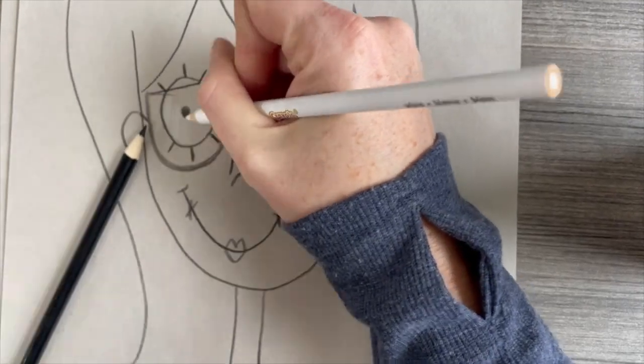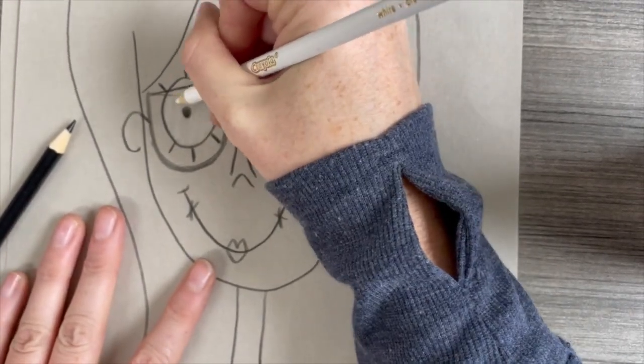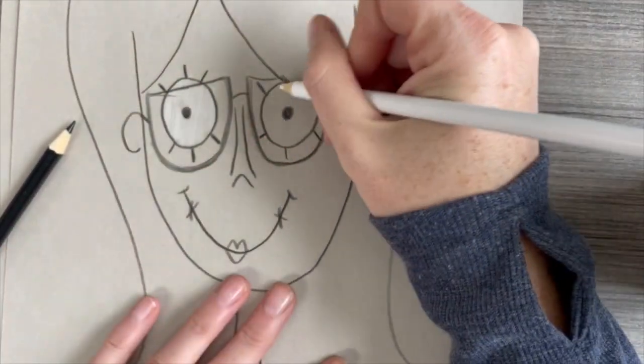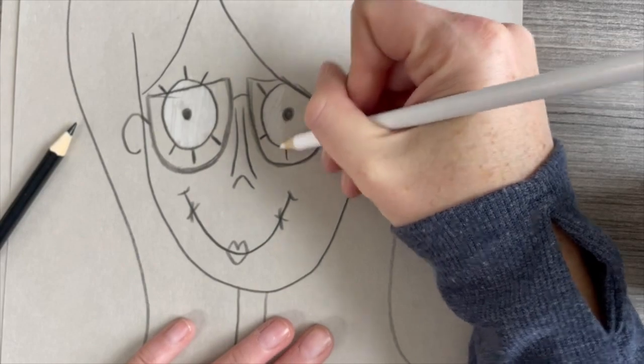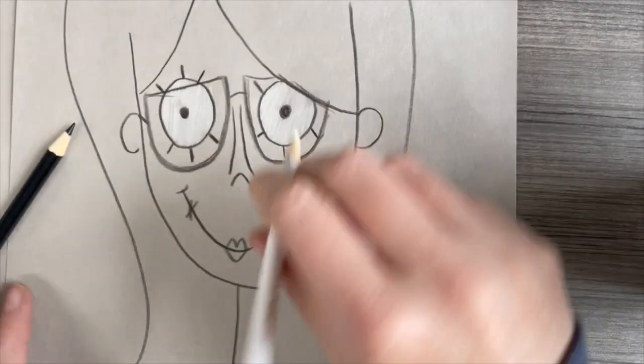By adding shading, we're going to give this sketch some dimension and shape. For the eyes, color them in with a white colored pencil. This creates a nice contrast.